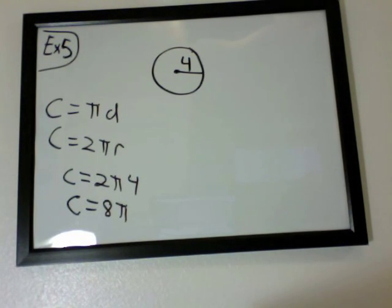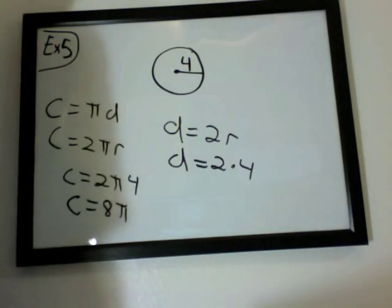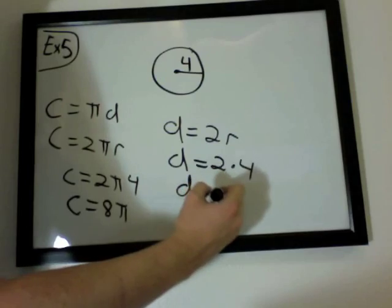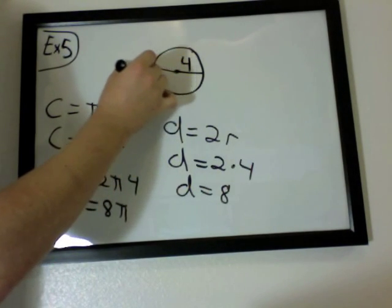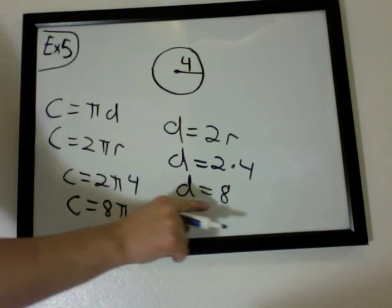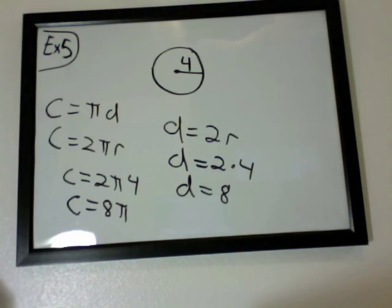To find the diameter would just be 2 times whatever the radius is. So 2 times 4 would give you the 8, which would give you the diameter. The full length all the way across. Then you can take this diameter and plug it into here, and we'll give you 8 pi. So either way, you can do both, and you'll find the same answer.